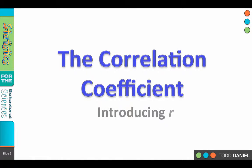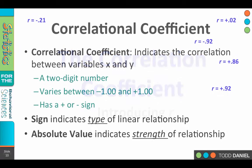So now we're going to talk about numbers. The correlational coefficient is the number that we use to describe the strength and the type of relationships between variables. A correlational coefficient indicates the correlation between variable X and variable Y, and I've scattered some correlational coefficients around this slide. They're the ones in blue, and you'll notice something about all of them. A correlational coefficient is a two-digit number, and it's a decimal.